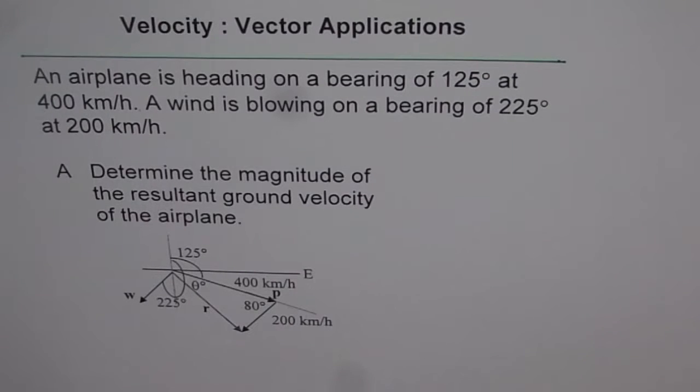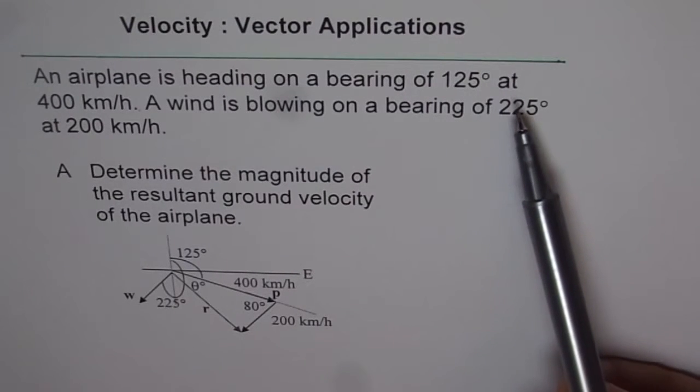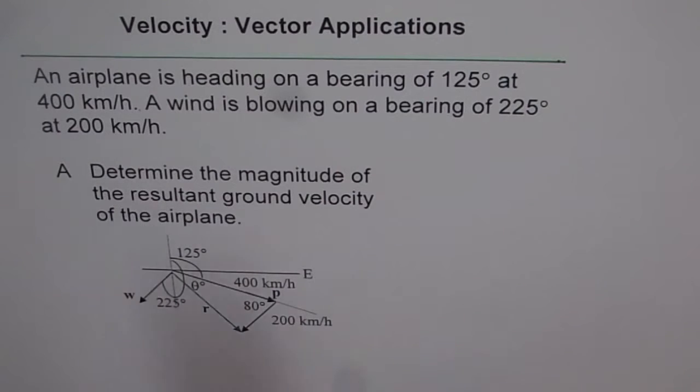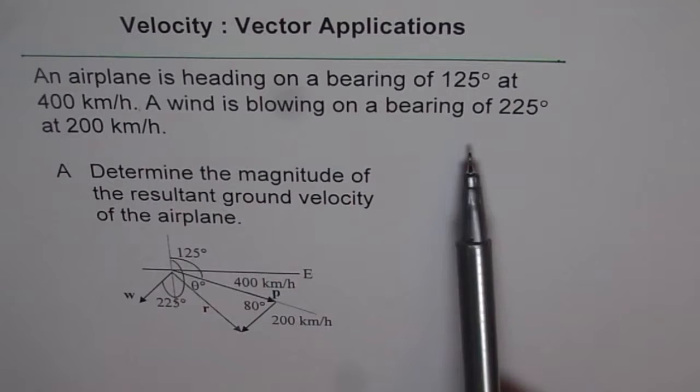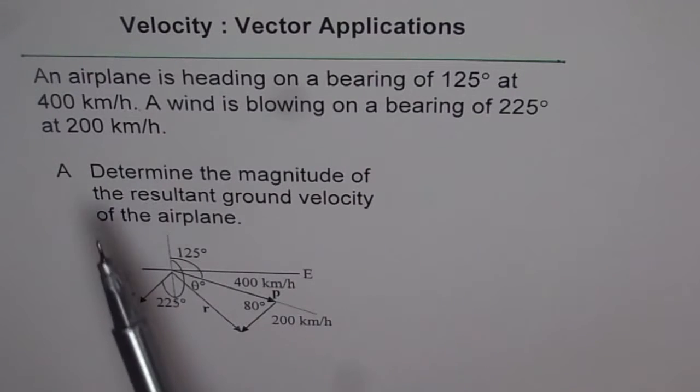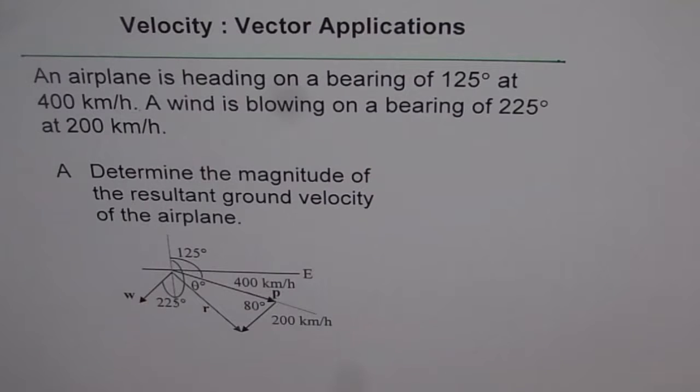Here is an application of vectors. An airplane is heading on a bearing of 125 degrees at 400 kilometers per hour. A wind is blowing on a bearing of 225 degrees at 200 kilometers per hour. Part A of the question is determine the magnitude of the resultant ground velocity of the plane and part B is determine its angle.